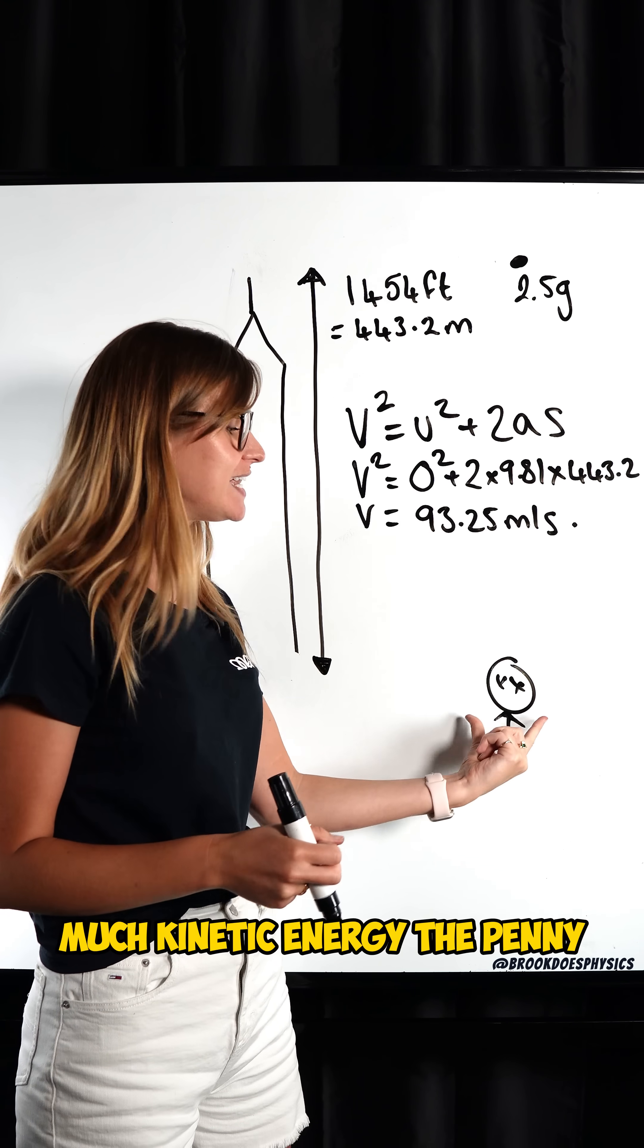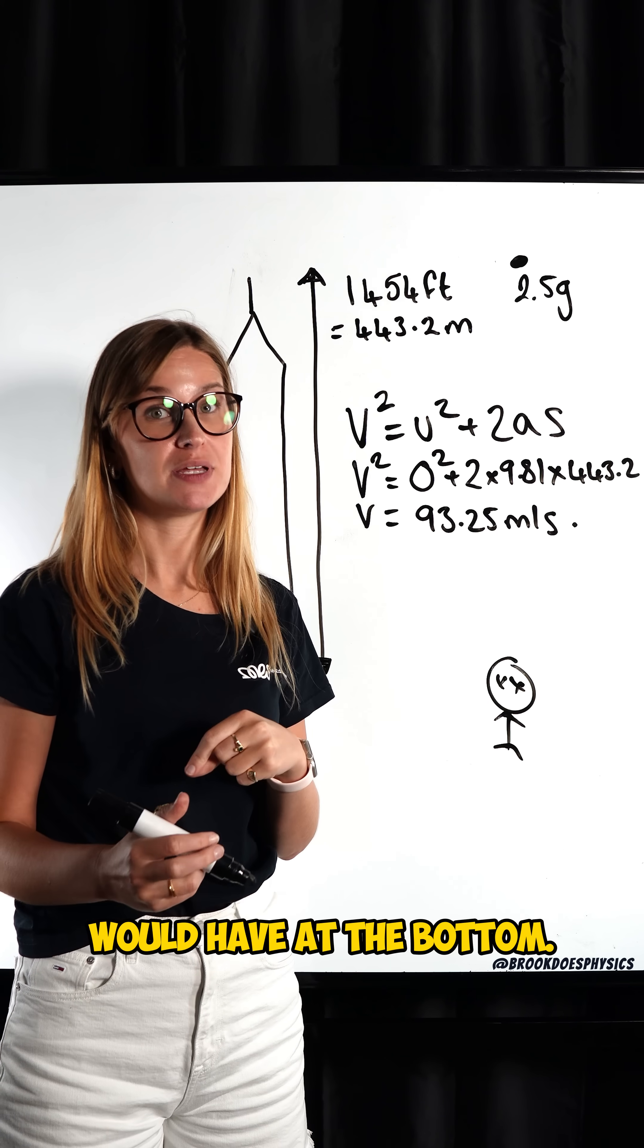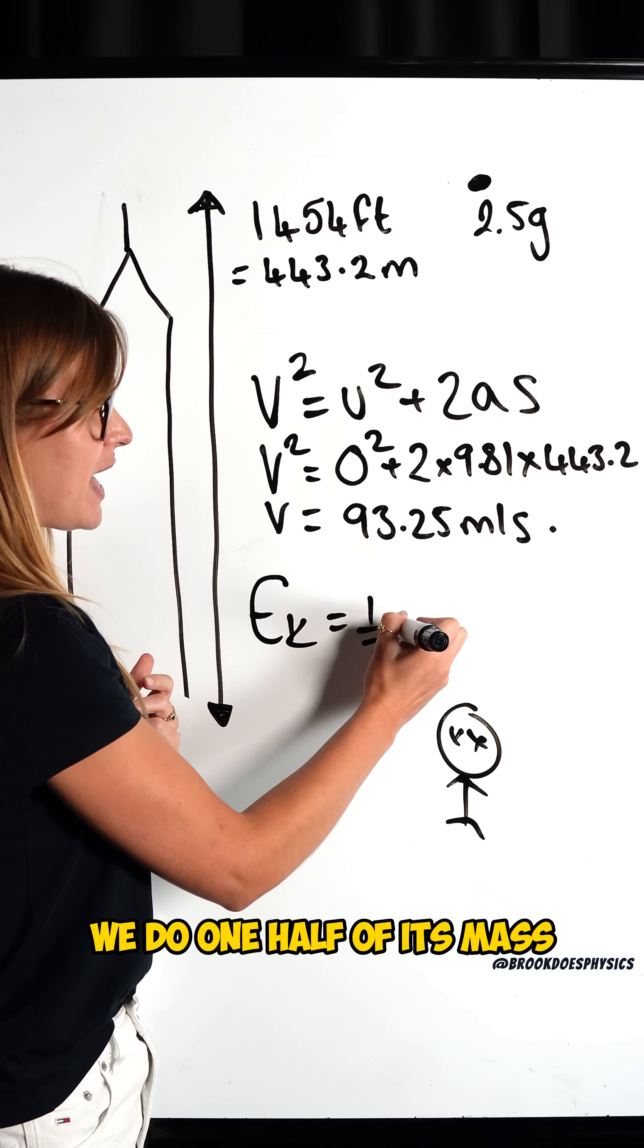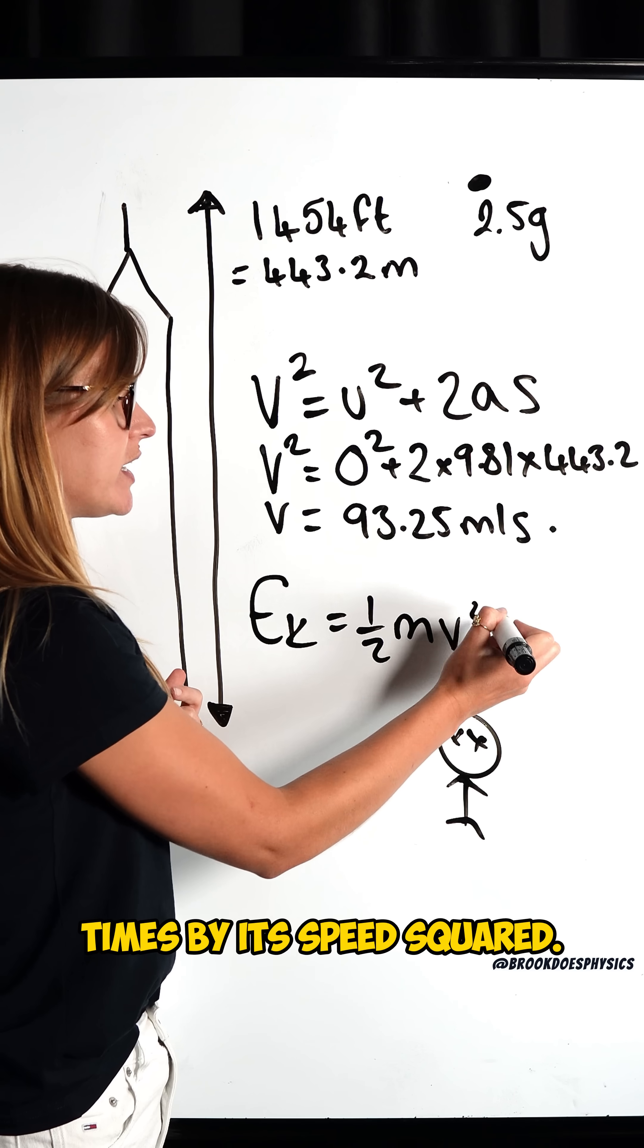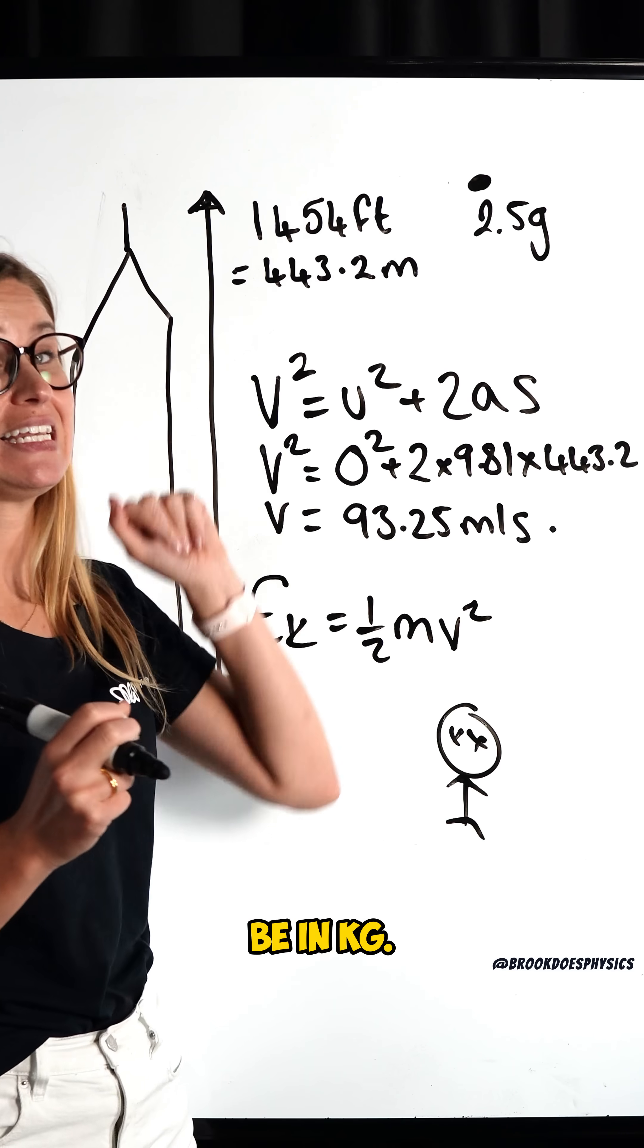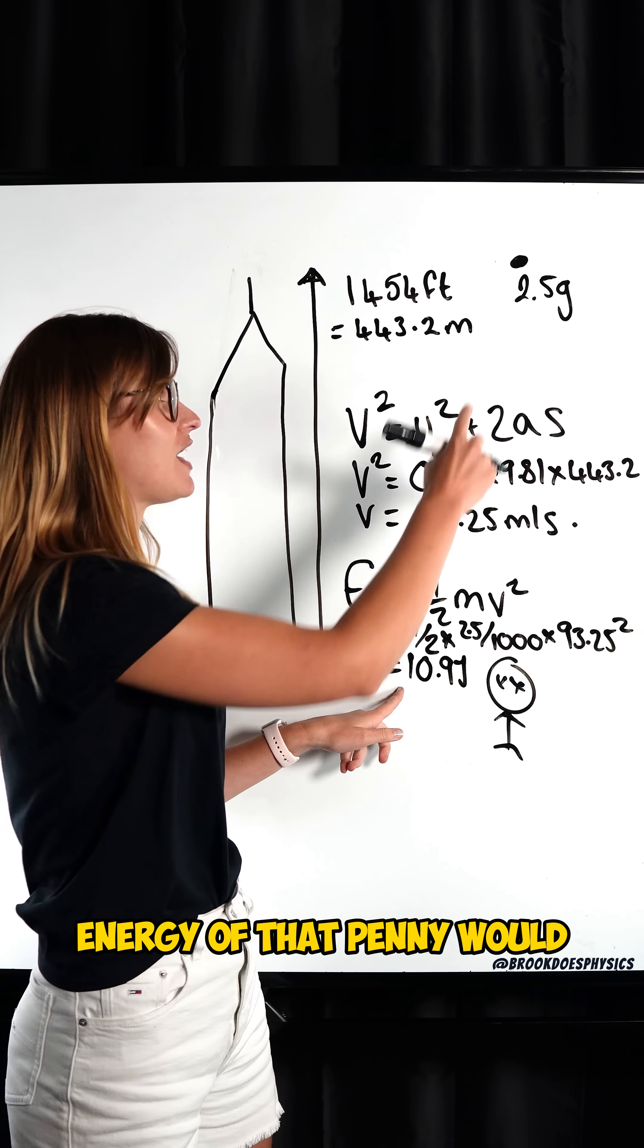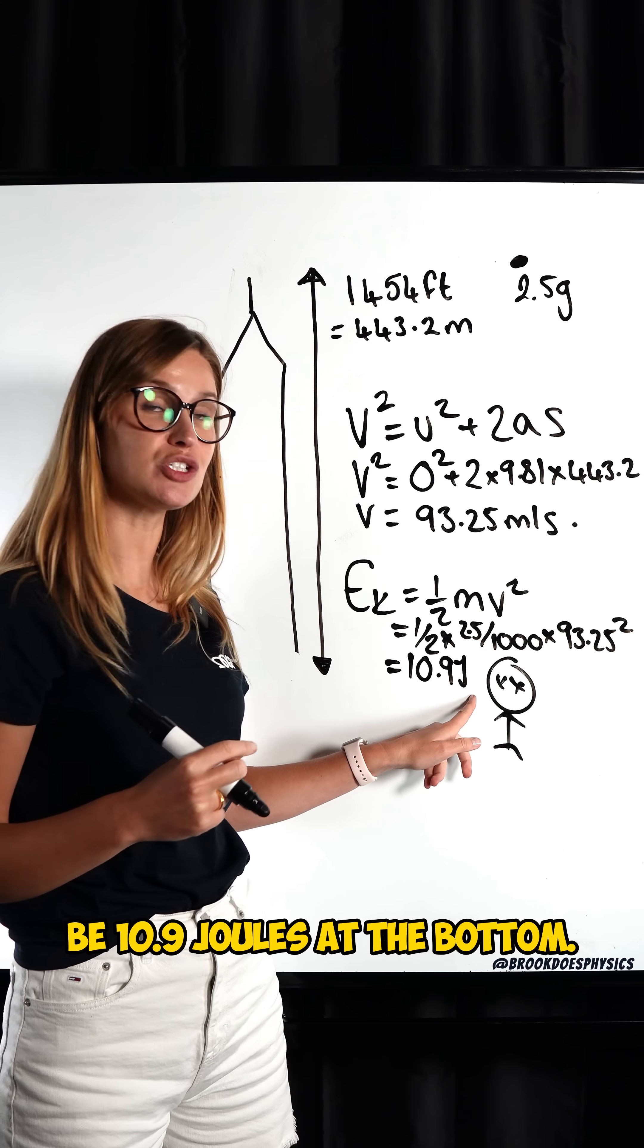So now we can calculate how much kinetic energy the penny would have at the bottom. To calculate kinetic energy, we do one half of its mass times by its speed squared, but its mass has to be in kilograms. If we plug in our numbers, we calculate that kinetic energy of that penny would be 10.9 joules at the bottom.